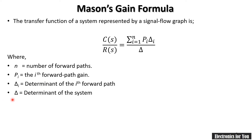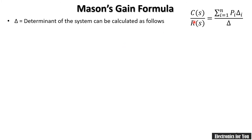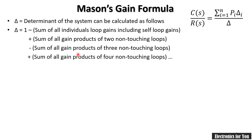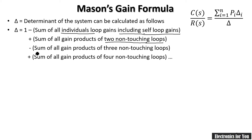Delta (Δ) is the determinant of the system. The formula for delta is: Δ = 1 minus the sum of all individual loop gains (including self-loop gains), plus the sum of all gain products of two non-touching loops, minus the sum of all gain products of three non-touching loops, plus the sum of all gain products of four non-touching loops, and so on.